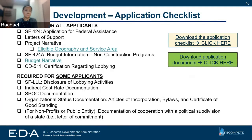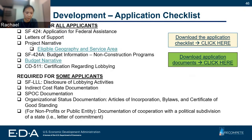For some applicants, additional forms will apply depending on your organization type or the activities you've participated in. These include your SF-LLL, your NICRA or indirect cost rate documentation, your SPOC documentation, your organizational status, and for nonprofits, specific documentation that we'll talk about. We'll go through all of these in a moment, but this is the full list for strategy development grants.